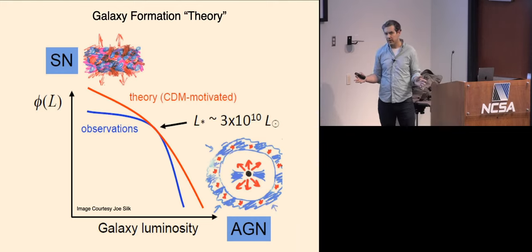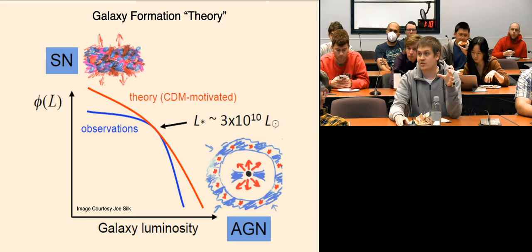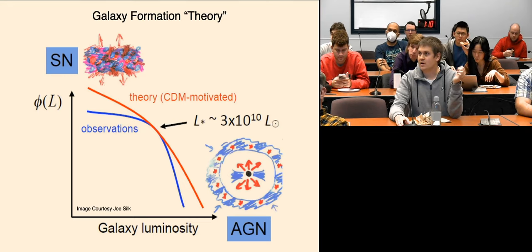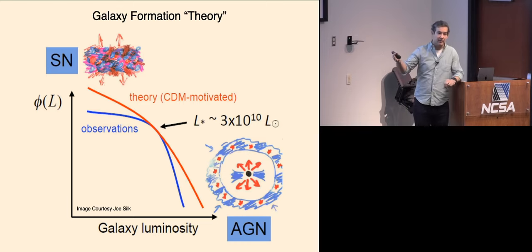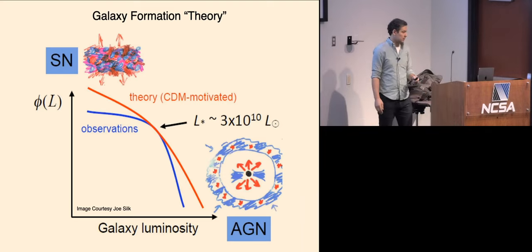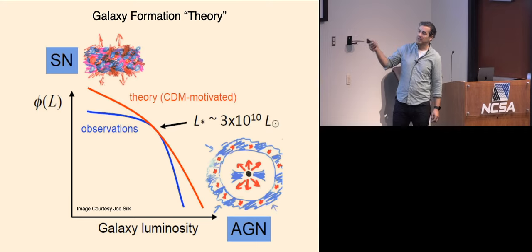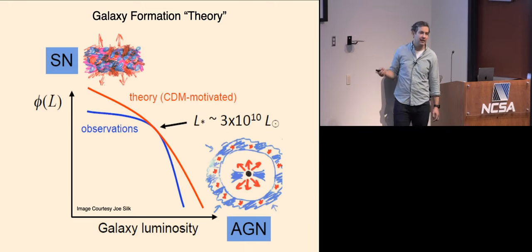People often invoke feedback processes to explain why star formation doesn't match at both ends. On the high-mass end they invoke AGN feedback — feedback from active galactic nuclei at the center of these objects. At the low-mass end, feedback from stellar winds, supernovae, etc. There seems to be a point where it doesn't matter, roughly around L* or just below the L* of our Milky Way.